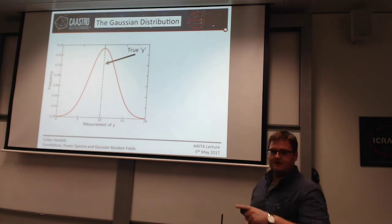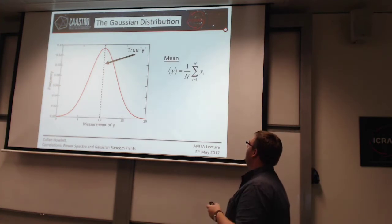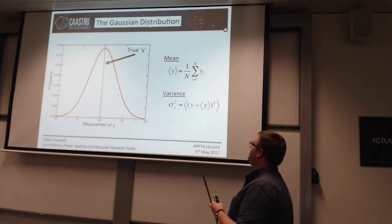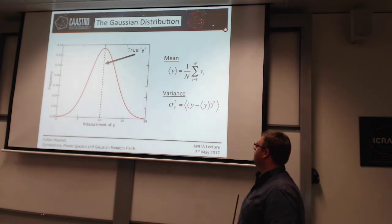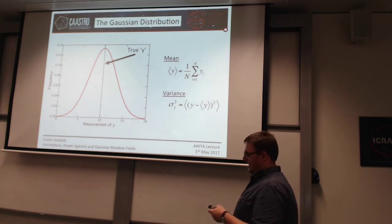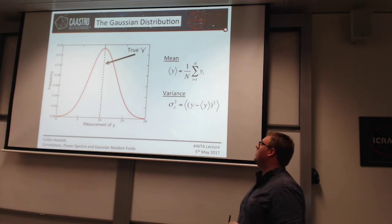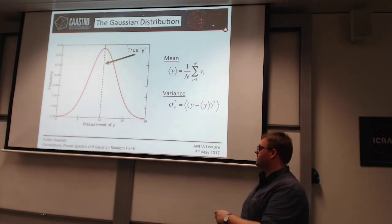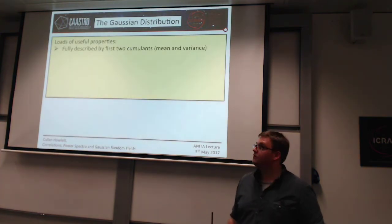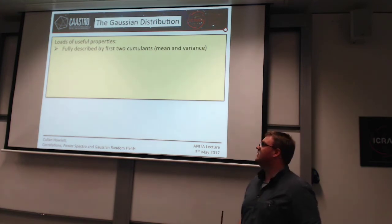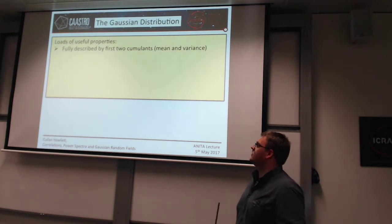So to start with, this is a Gaussian. I'm pretty sure you've all seen this before. You can characterise it by its mean and its variance. If you've got a bunch of measurements, you often will assume they're described by a Gaussian with some mean and some error. The Gaussian has a bunch of useful properties which make it ideal as an assumption if you don't know what the PDF is. For instance, it's fully described by its first two cumulants — the mean and the variance. You don't need anything else. That's not true of many other functions, where you might also need skewness or kurtosis.